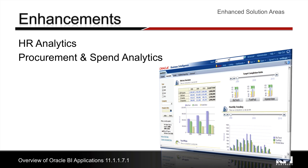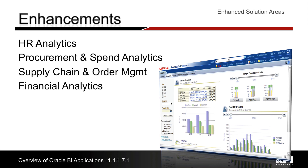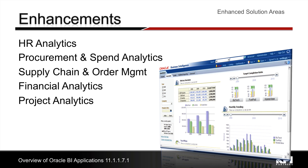Procurement and Spend Analytics contains a new content area for sourcing analytics to help analyze negotiations. Supply Chain and Order Management Analytics has enhanced inventory analysis and new item cost history. Financial Analytics is now enabled with budgetary control analytics and fixed asset analytics for ODI and Fusion. KPI is the only partner who has built an exclusive application extension for fixed asset analytics for use with Informatica.